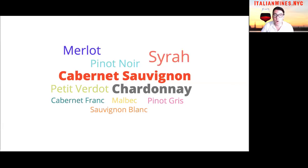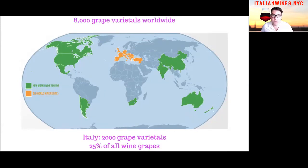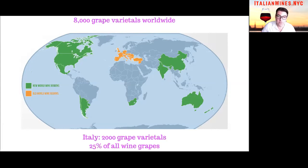These are the most popular wines in the world. But take a look at this map — these are all the wine producing regions throughout the world. The green areas are the new world wines, the orange areas are the old world wines, and there's an estimated 8,000 different types of native grapes used for wine making. And if that's true, Italy — this tiny little country — contains 25% of all the world's wine grapes. One out of every four wine grapes in the world are native Italian grapes.